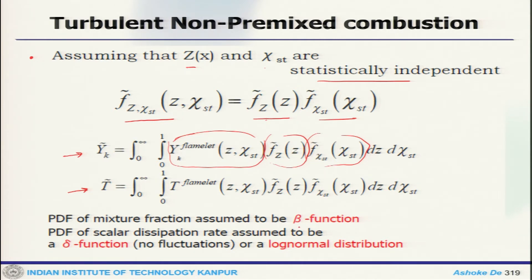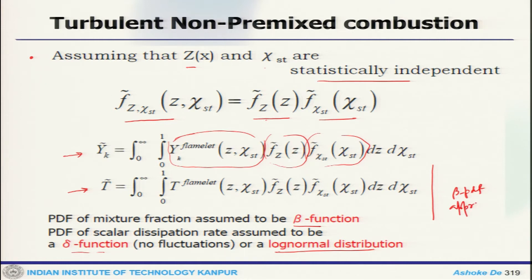The PDF of mixture fraction is assumed to be a beta function, and the PDF of scalar dissipation rate is assumed to be a delta function — meaning no fluctuation — or a log-normal distribution. That is why in the literature you can see this presumed PDF approach is also called the beta PDF approach. You assume the shape of the PDF to find out the mean profile.